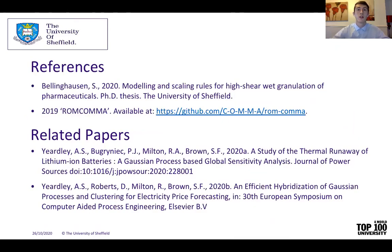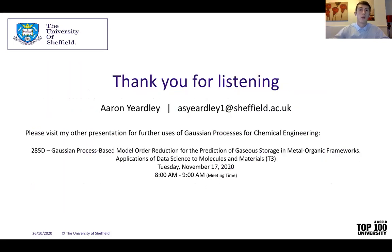Before I finish, I thought it would be best to show you the two references presented in this presentation. The first, Bellinghausen 2020, shows the verification of a process model, and the second is the RomCommerce software used for Gaussian process and global sensitivity analysis. For further work using GPs, please see two related papers that I have published during my PhD, and hopefully many more will soon follow. Thank you all for listening and please ask any questions — I'm really excited for the opportunity to network. Please watch out for my other presentation where I hope to show further use of Gaussian processes for chemical engineering. Thanks a lot.